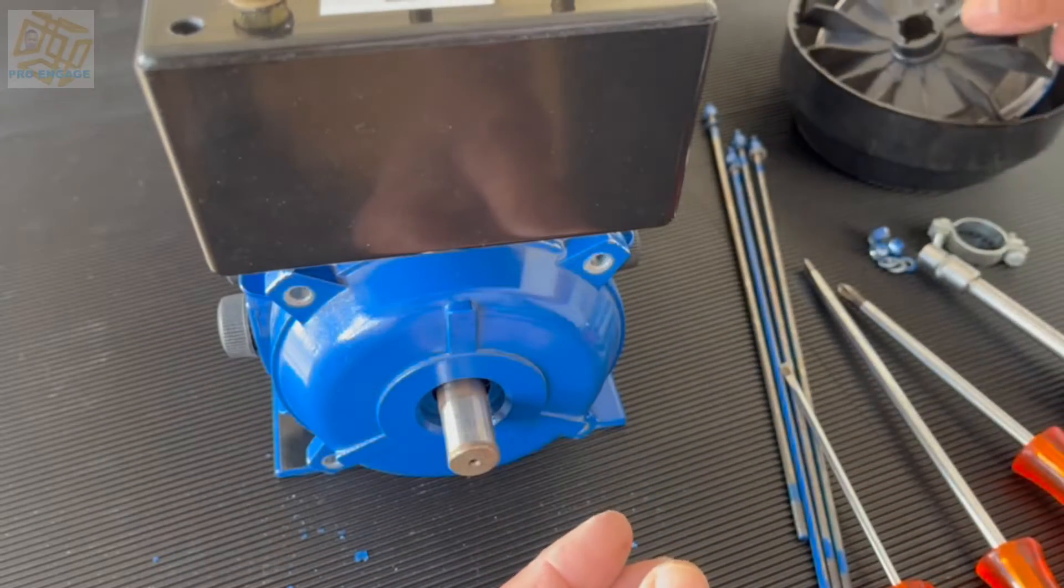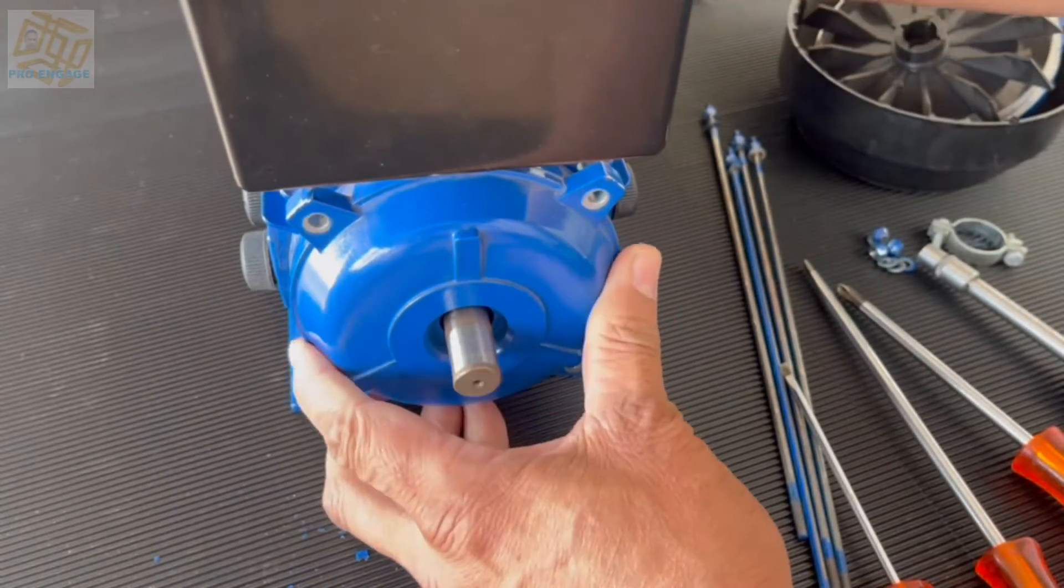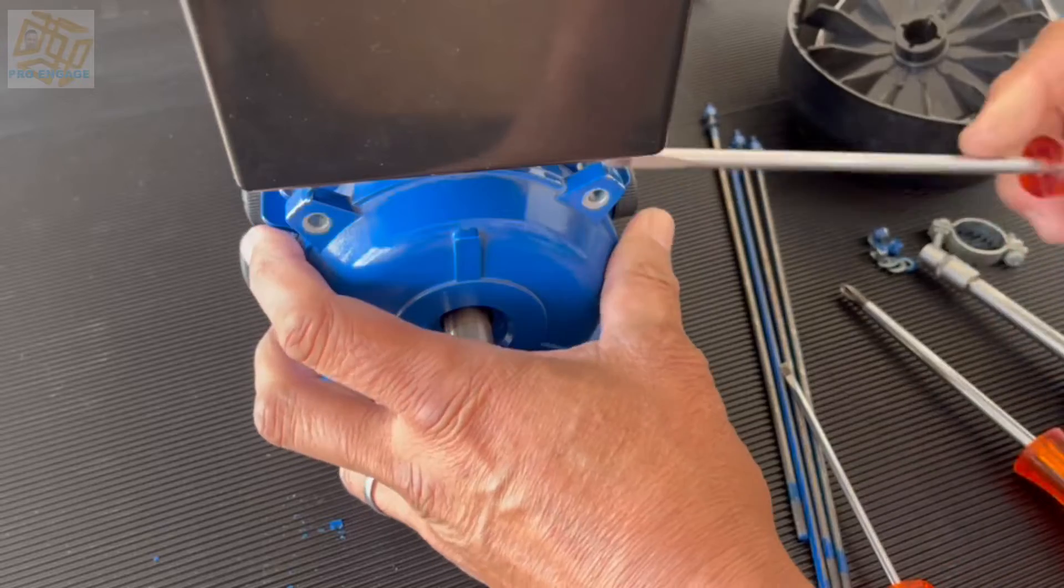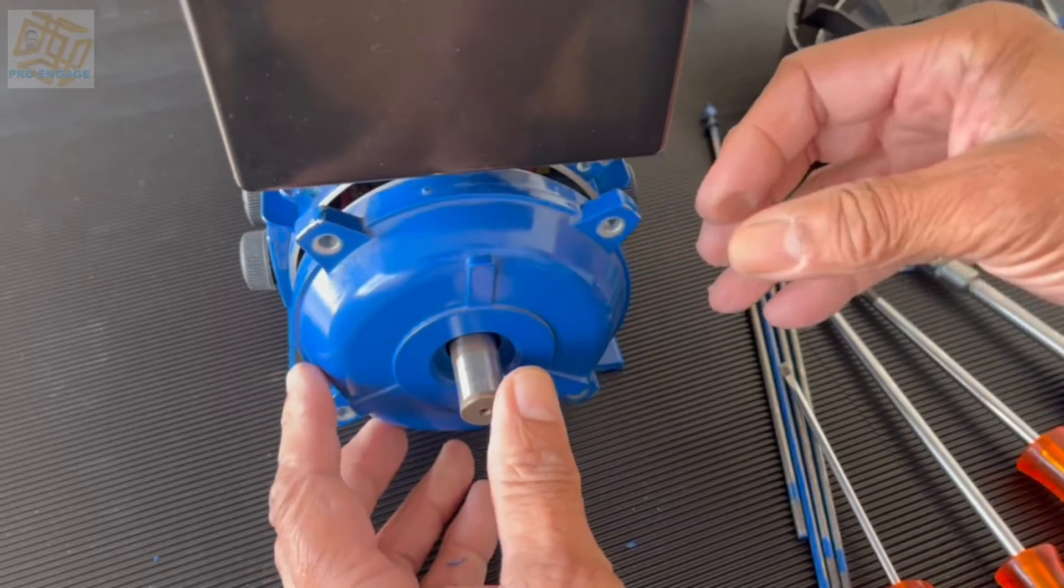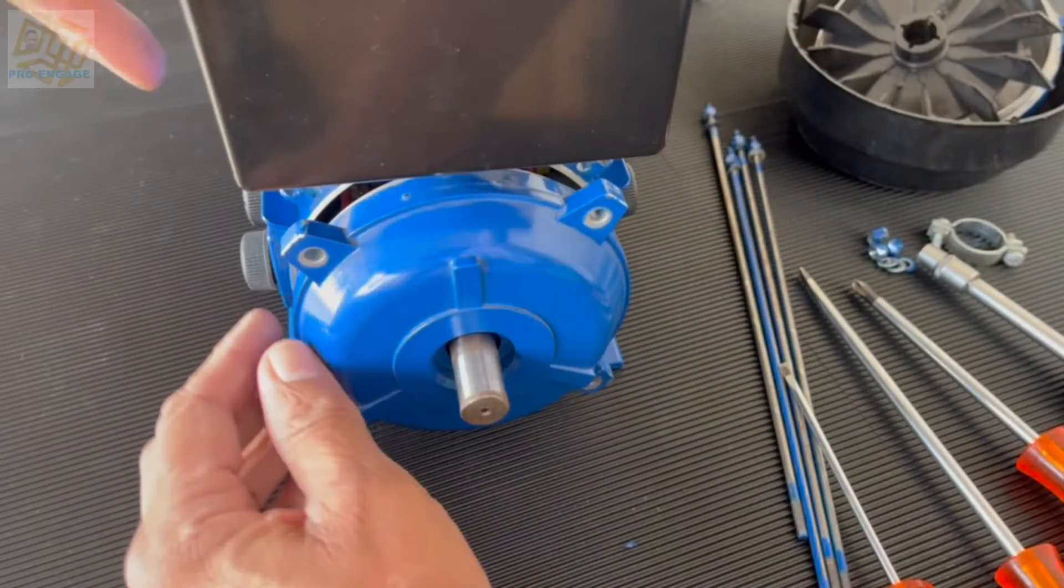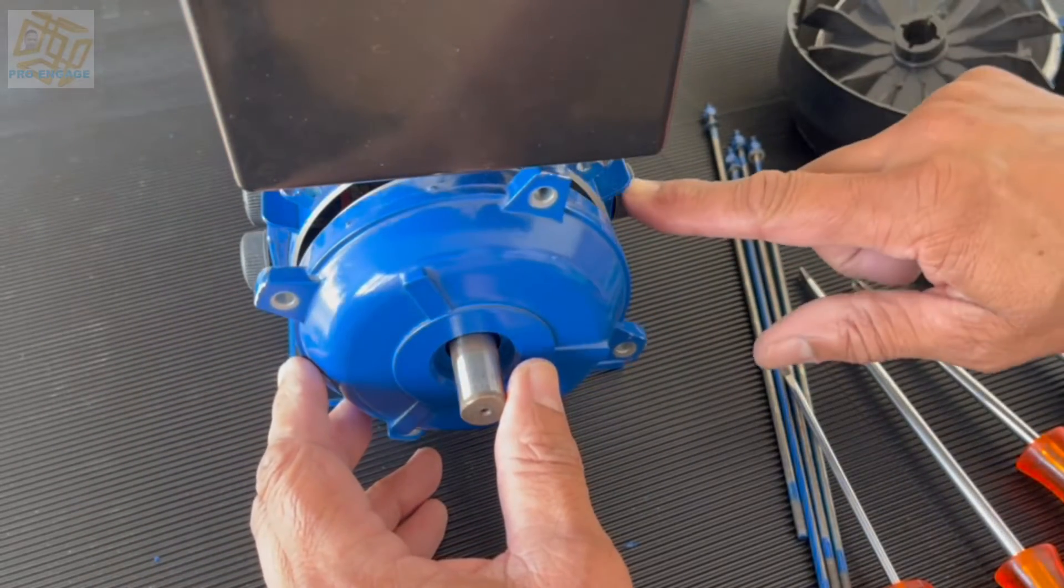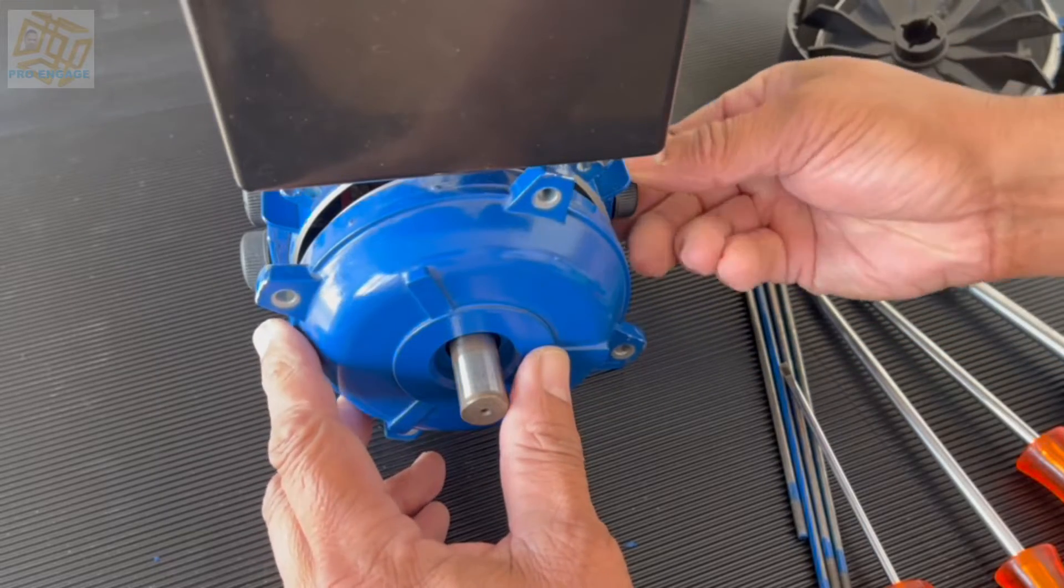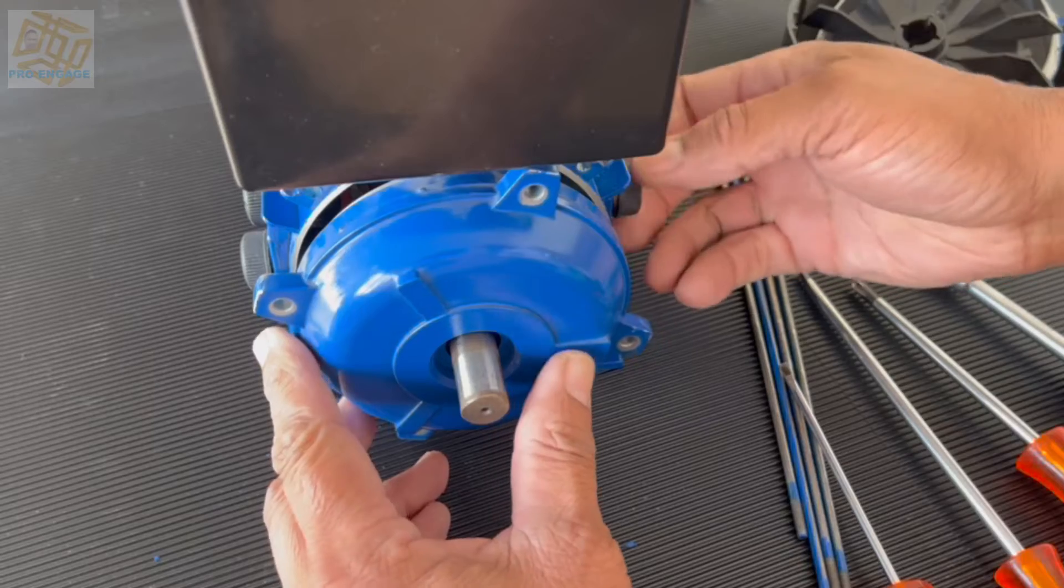It will be interesting to see when I get the back end shield off. Maybe we can just have a quick look and see what it possibly looks like. It'll be interesting and then we'll have a look at the brushes as well, pull them out. In this case, this won't move further because the brushes are now pushing up against the slip rings.